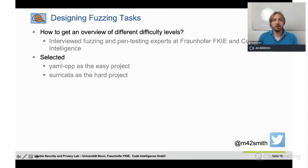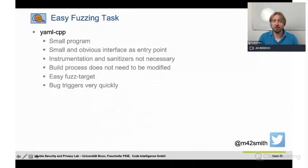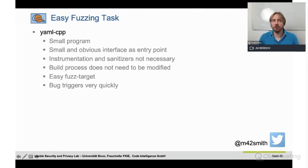Zirco gave us ideas of what projects he found easy and hard. From that we picked YAML-CPP — a YAML parser — and Suricata — a network intrusion detection software — as the easy and hard projects. For the easy fuzzing task, YAML-CPP is a small program with a small and fairly obvious interface with clear entry points. Instrumentation and sanitizers are not necessary, the first fuzz target to write is fairly easy, and the bug triggers really quickly — within seconds of starting the fuzzer. This is really the best case for fuzzing.